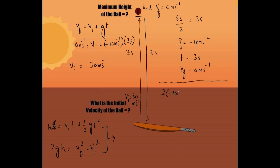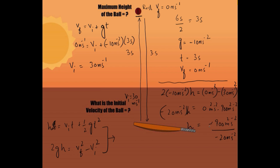Let's use the third equation of motion: 2 × (−10 m/s²) × h = (0 m/s)² − (30 m/s)². This gives: 0 − 900 m²/s², so −20 m/s² × h = −900 m²/s². Dividing −900 by −20, h is equal to 45 meters. The maximum height the ball attained in 3 seconds is 45 meters.